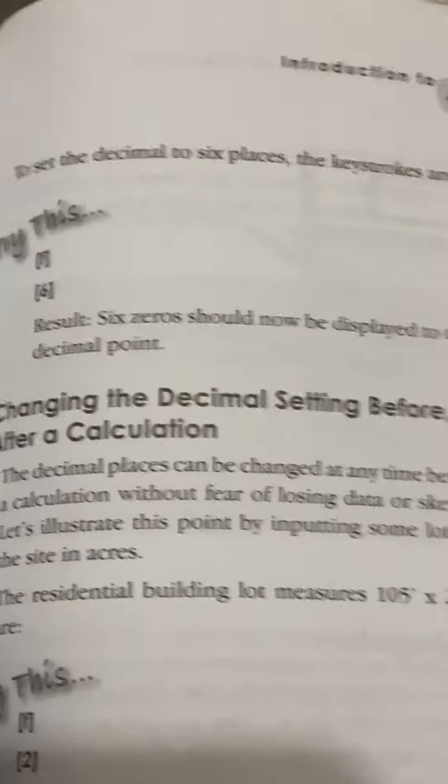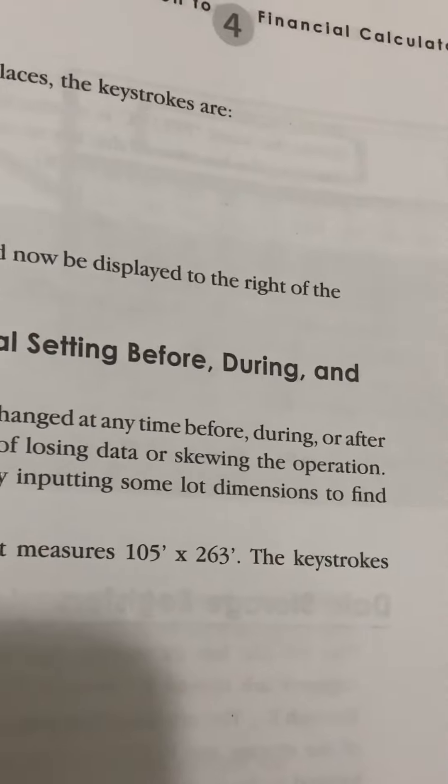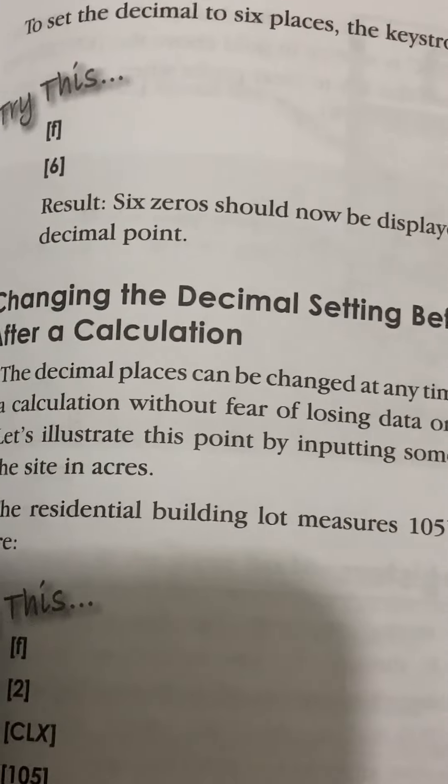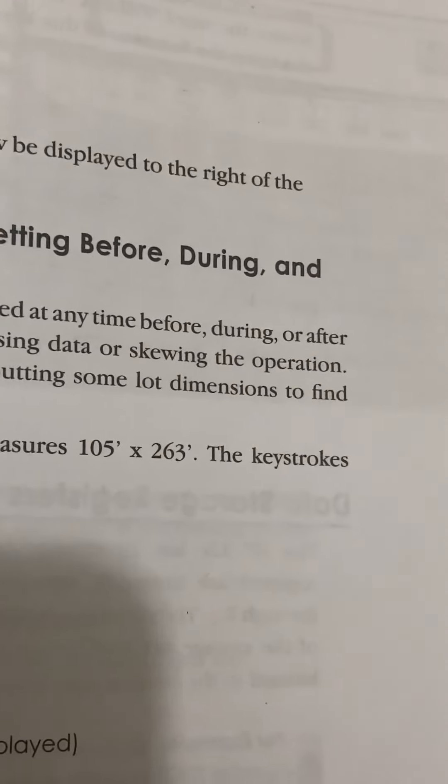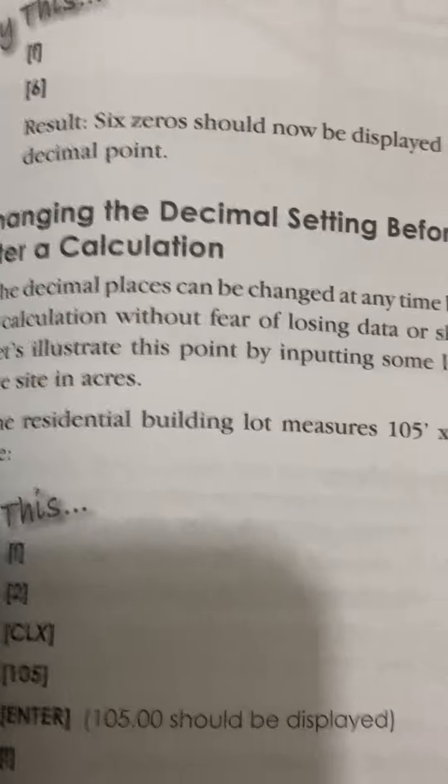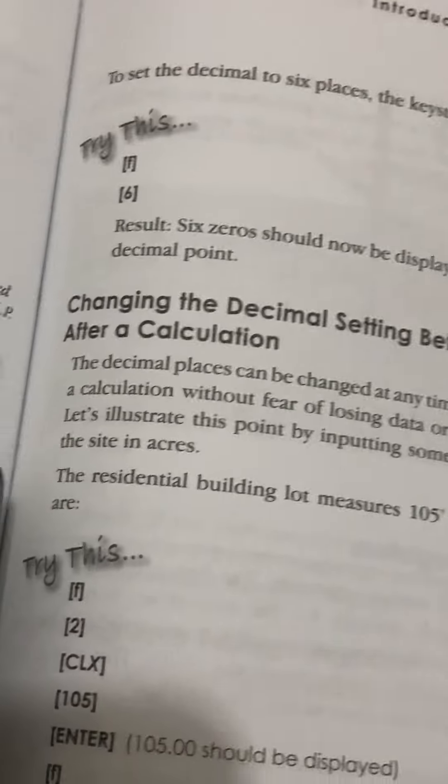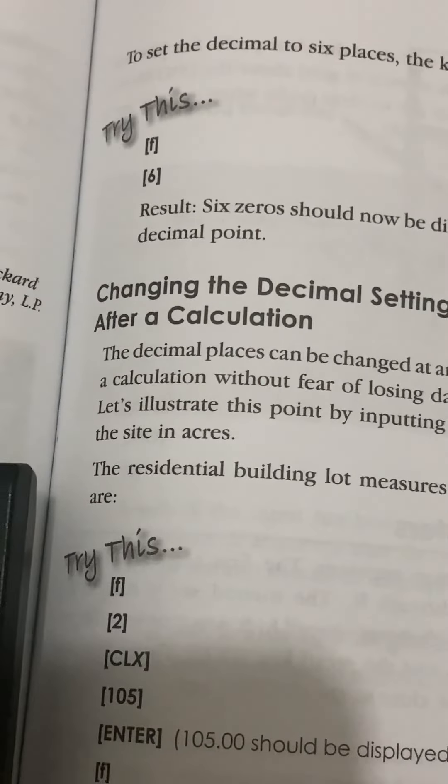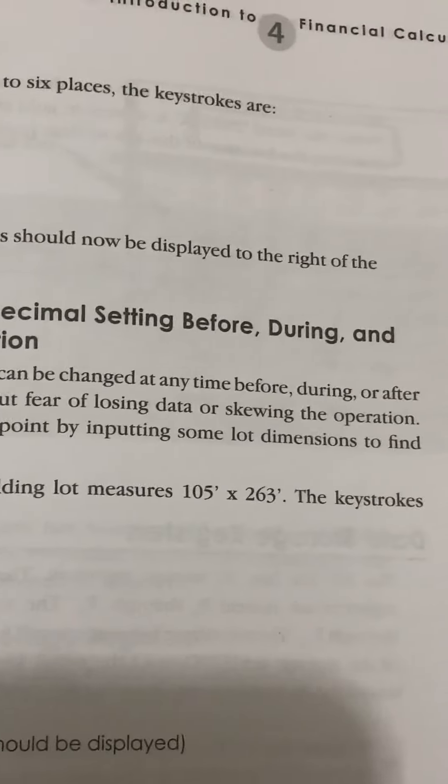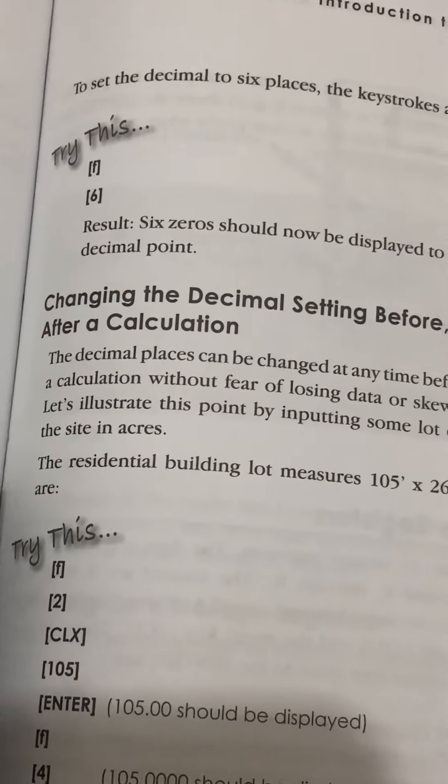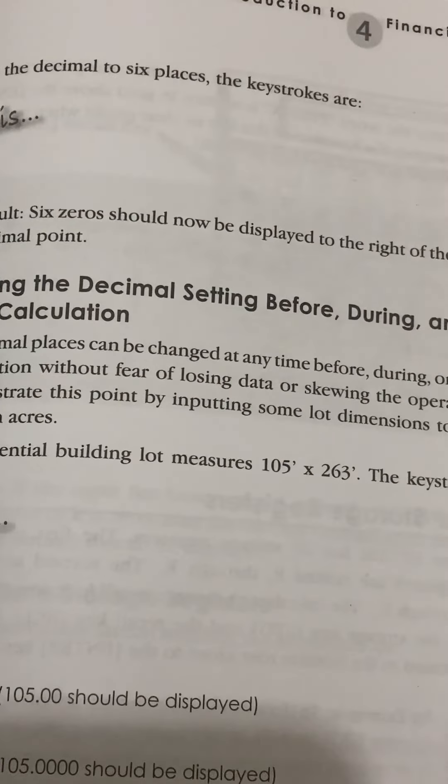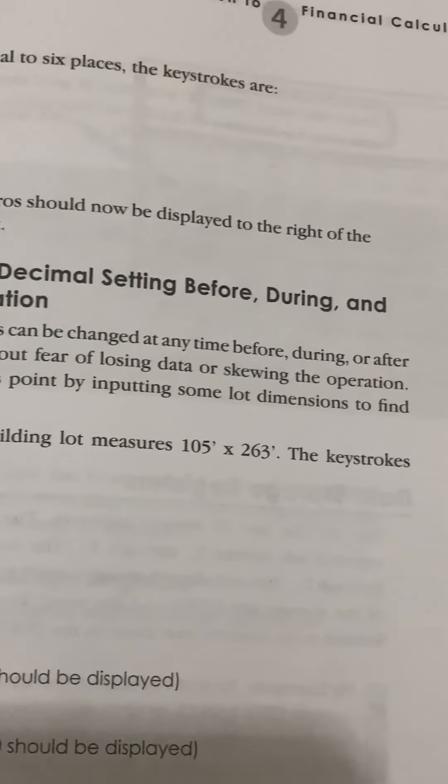Changing the decimal setting before, during, and after a calculation. The decimal places can be changed at any time before, during, or after a calculation, without fear of losing data or skewing the operation. Let's illustrate this point by inputting some lot dimensions to find the site in acres. The residential building lot measures 105 feet by 263 feet. The keystrokes are: All right, let's try this.